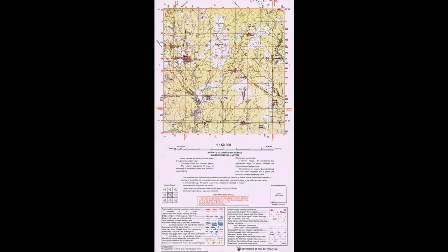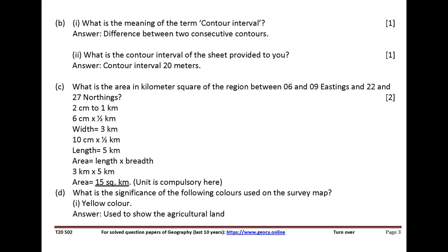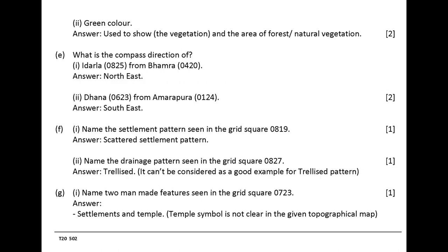What is the significance of the following colours used on the survey map? Yellow colour: used to show the agricultural land. Green colour: used to show the area of forest.